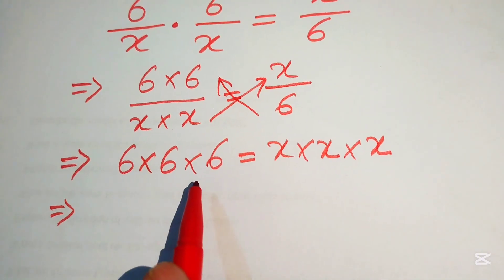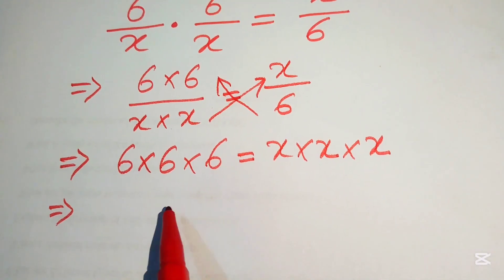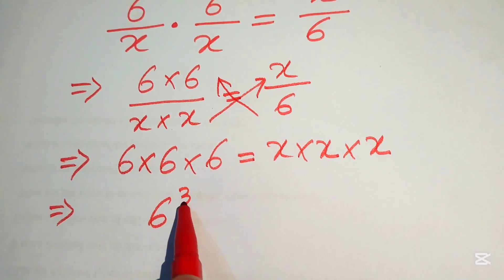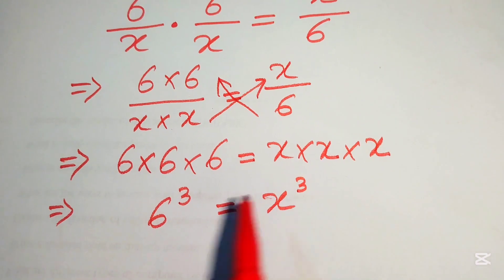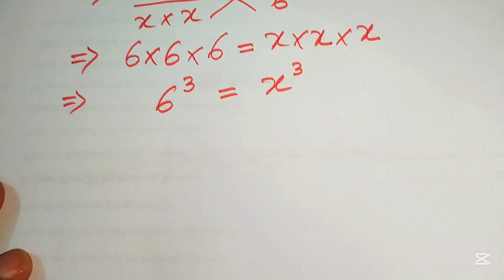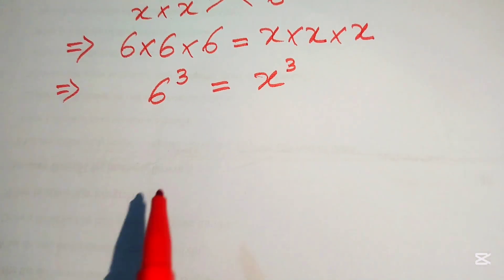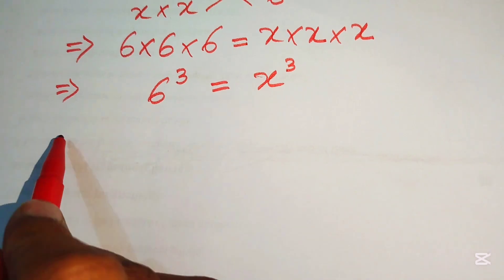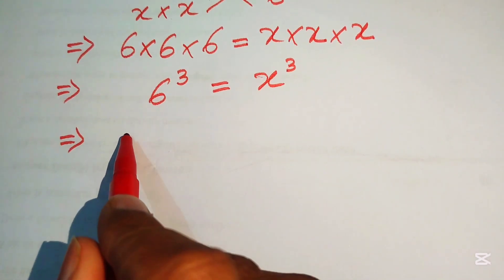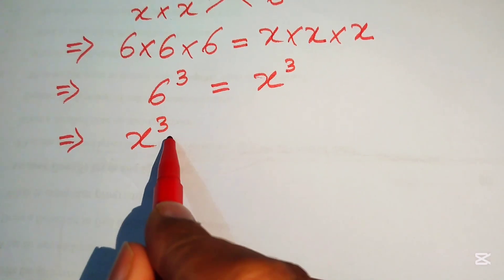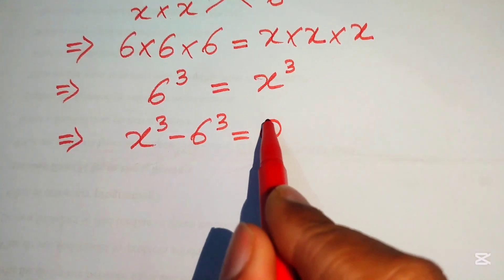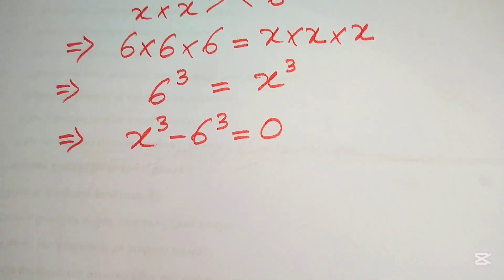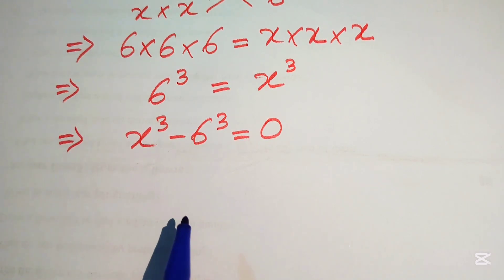We see that 6 is multiplied 3 times, so we write it as 6 cubed. Similarly, x is multiplied 3 times, so we write it as x cubed. Moving 6 cubed to the right-hand side gives us x cubed minus 6 cubed equals 0.